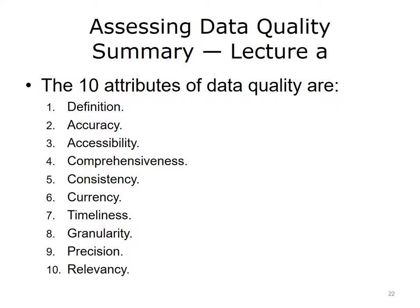In summary, data used for research purposes is collected under different conditions than that used for quality improvement. Poor quality data contributes to error. The ten attributes of data quality are: Definition, Accuracy, Accessibility, Comprehensiveness, Consistency, Currency, Timeliness, Granularity, Precision, and Relevancy.